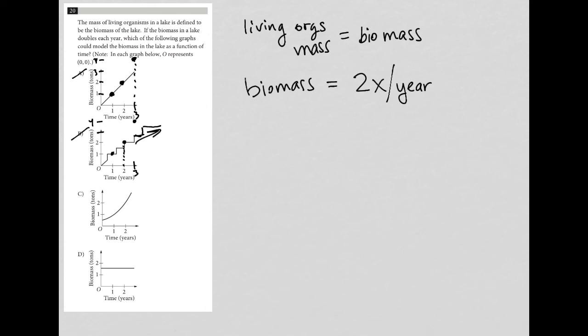So for choice C, at year 1, I'm at 1. At year 2, I'm at 2, which is expected. So again, let's go to 3 and 4. And then for year 3, I expect to be at 4. This looks pretty good.